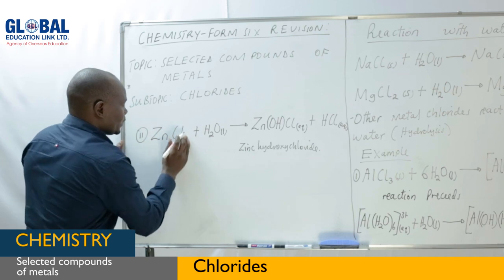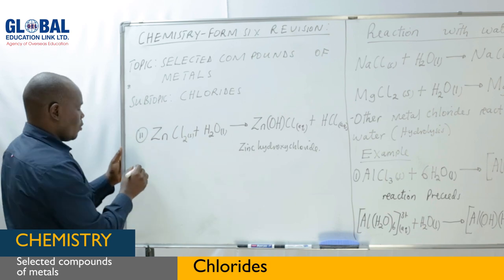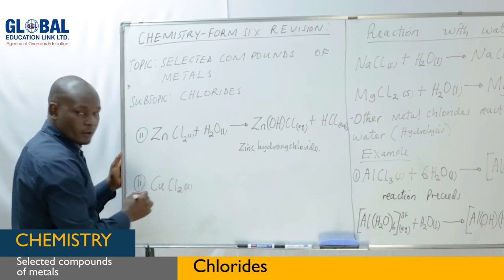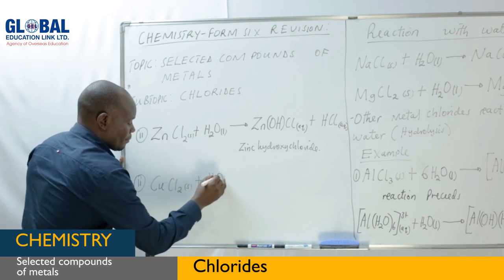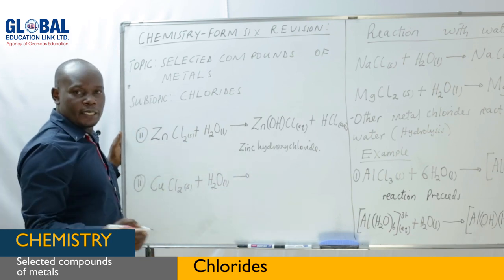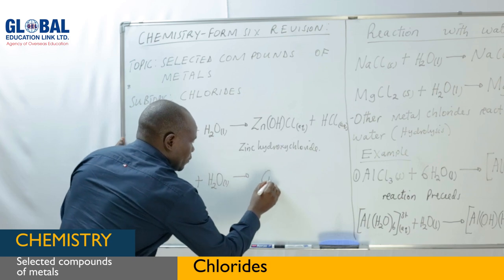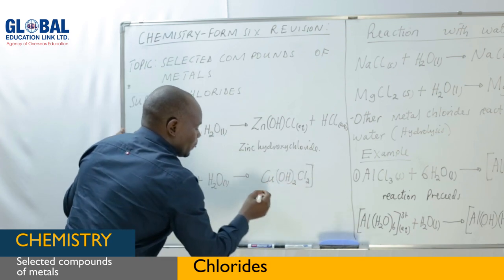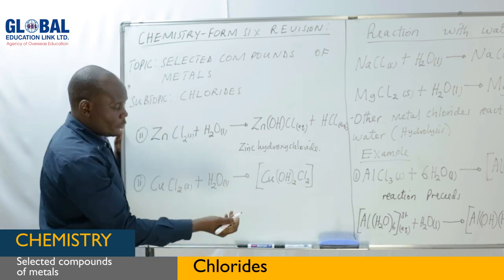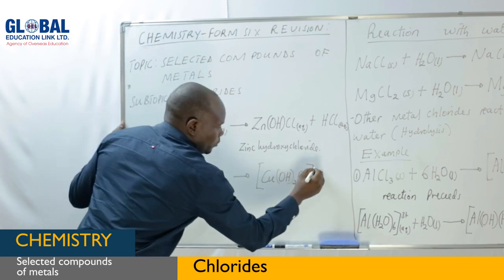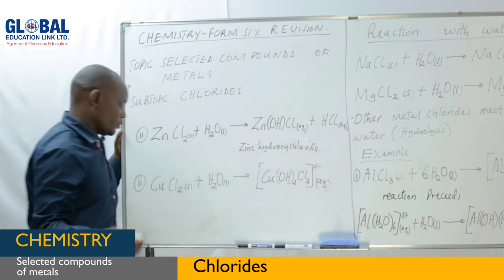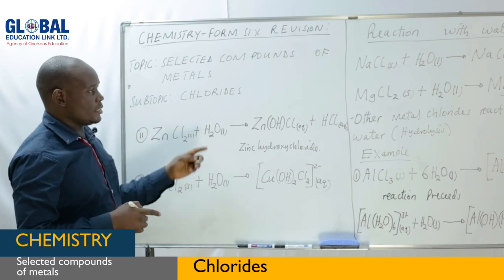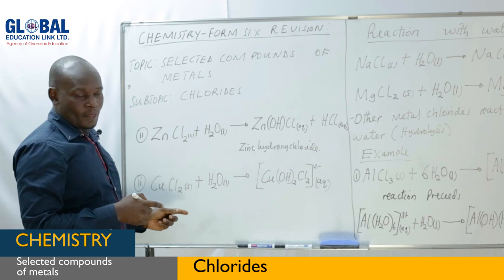If we consider another example of copper chloride — when copper chloride is reacted with water and undergoes hydrolysis, it results in the formation of a complex compound, which is copper dichloro dihydroxyl cuprate two ions, which is aqueous. It's your task to balance the equation. That is how metal chloride reacts with water, and that reaction is known as hydrolysis.